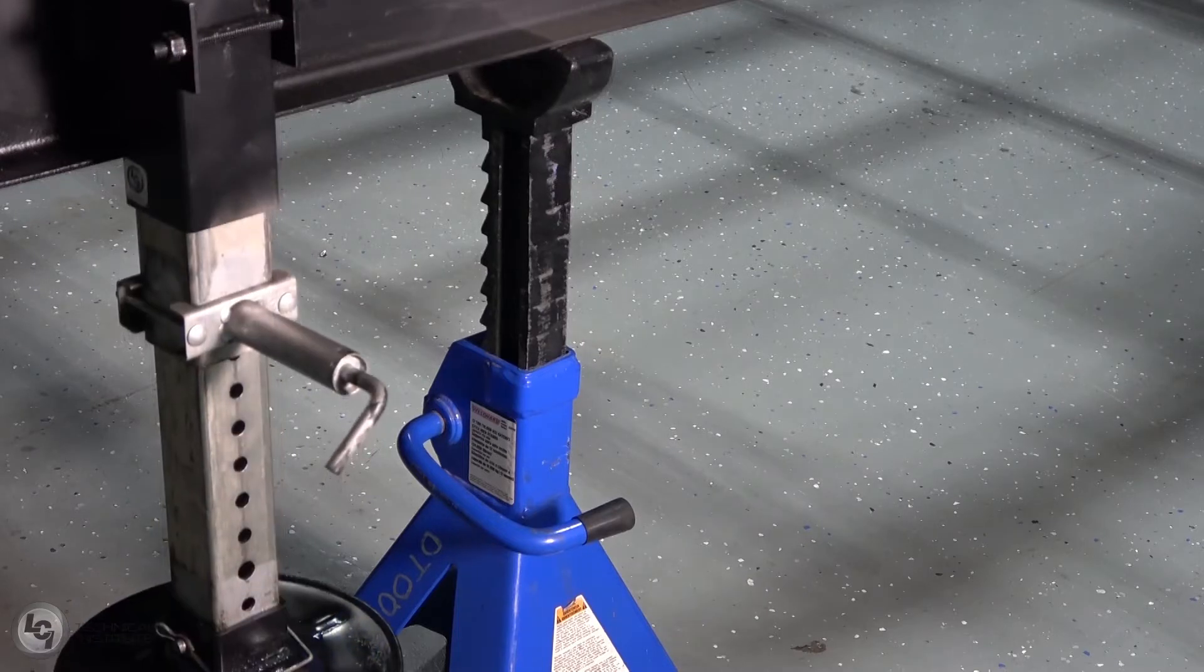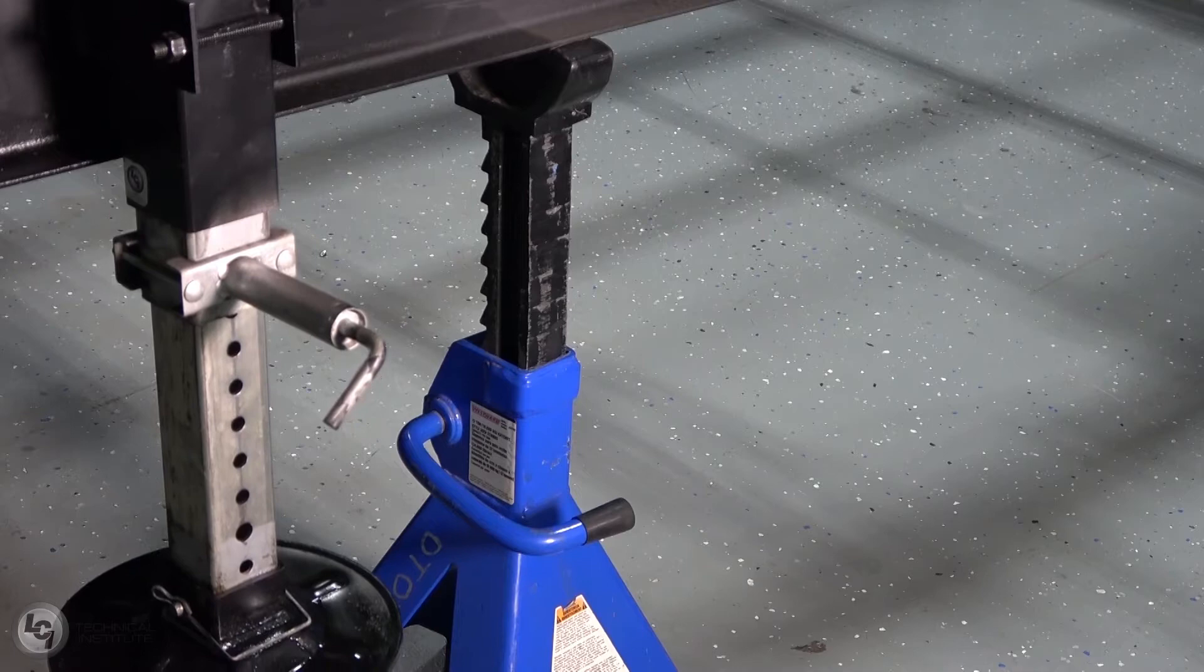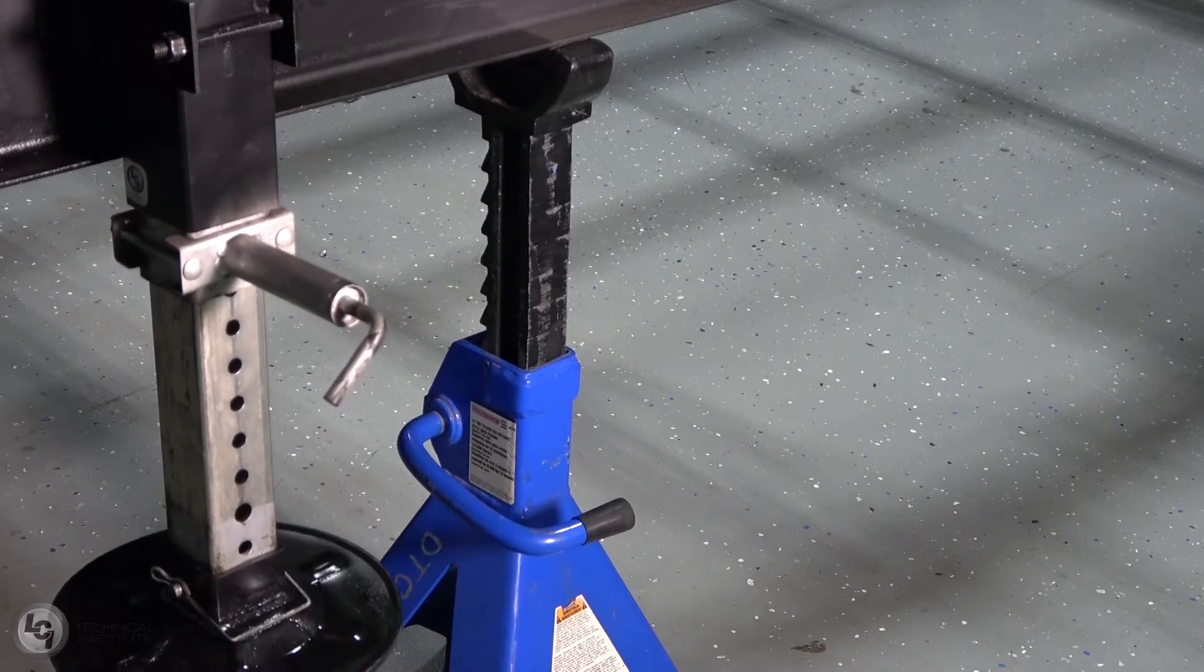With your support in place, retract the jack that you intend to replace the inner leg on. Remember to support both sides before retracting the landing gear legs.